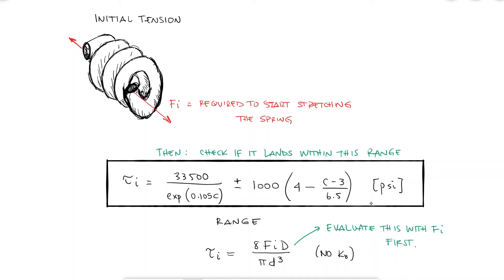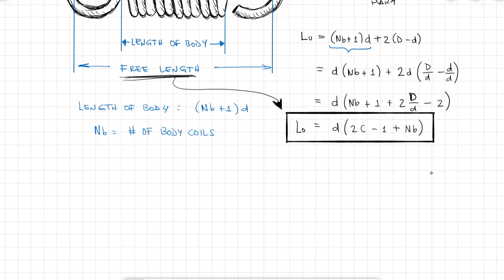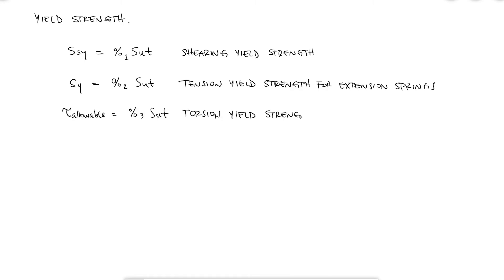Finally the percentage for yield strengths are different for shearing in compression springs than for torsion and bending in extension springs. So you'll find different percentage numbers for Ssy, the shearing yield strength we've been using so far, than for tension yield strength of helical extension springs and for torsion yield strength of helical extension springs if you look them up online.